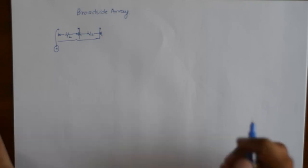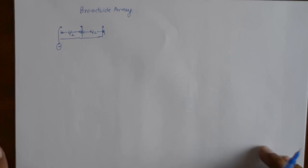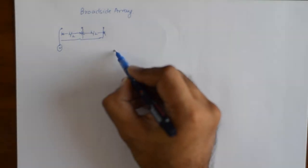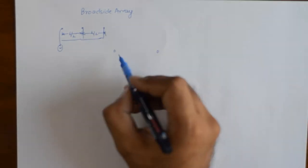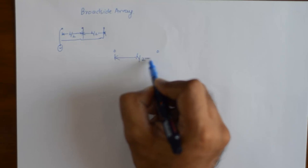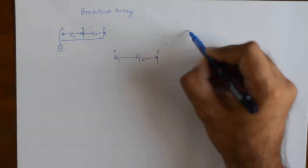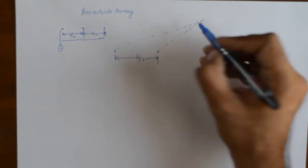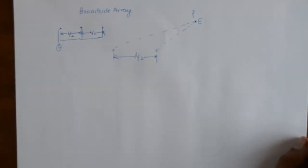The next antenna array type is the end-fire array, which has a uniform progressive phase shift between elements — we'll discuss that later. For now, the broadside array, being the simplest, has uniform spacing and the same power connected to all elements. To understand it, we take two elements separated by a distance of lambda by 2 and calculate the electric field intensity E at a point P which is far off from the two elements.